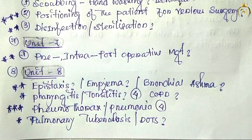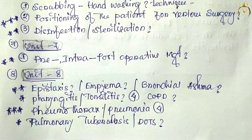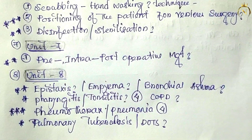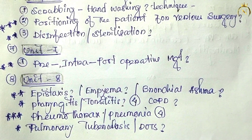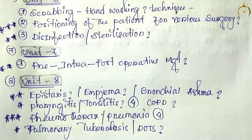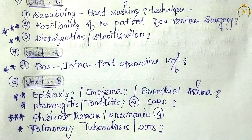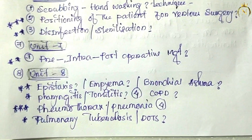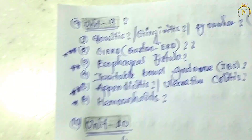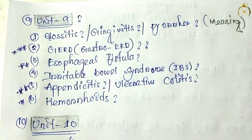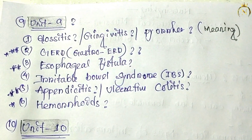Unit eight covers epistaxis, emphysema, bronchial asthma, pharyngitis, tonsillitis, COPD, pneumothorax, pneumonia, pulmonary tuberculosis, and DOTS therapy. These are the important questions — they will come as meaning questions or sometimes for four marks.